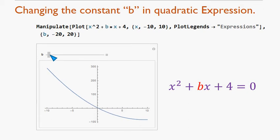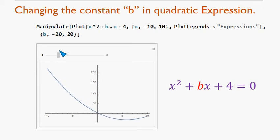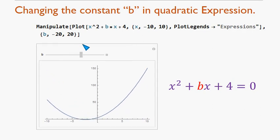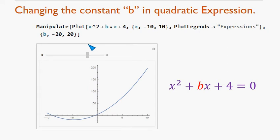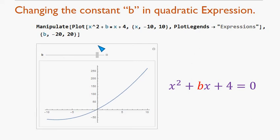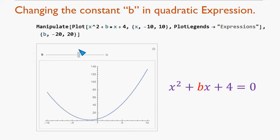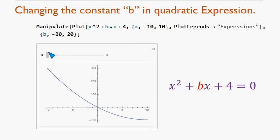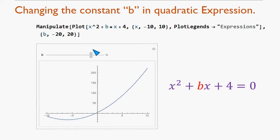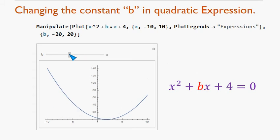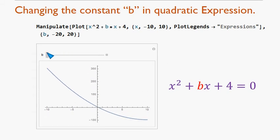I am moving this point towards right and keep observations on the vertex of the graph. Again, I am moving it towards left. Vertex is moving towards right. It is following an inverted parabolic path. The vertex is following inverted parabolic path.